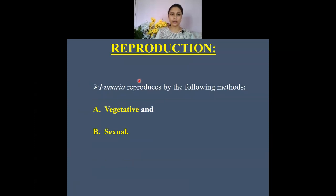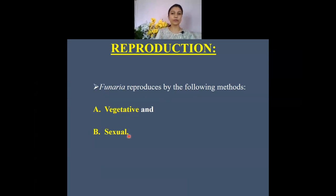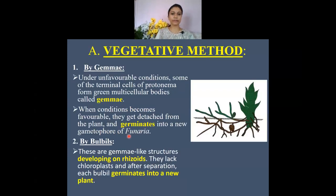Now let us move on to reproduction. Funeria reproduces by two different methods: the first method is vegetative, and the second one is sexual. Vegetative reproduction takes place by several different sub-methods.